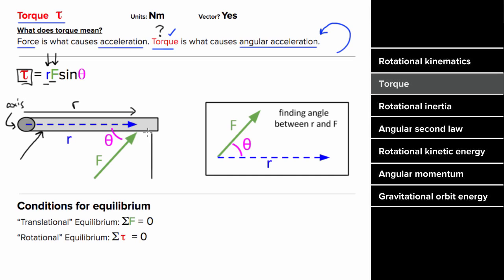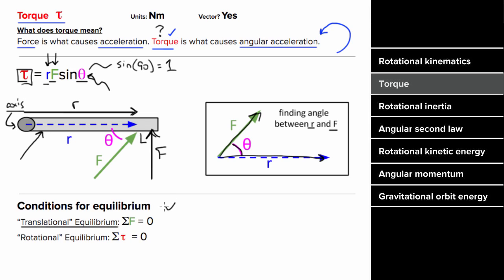To maximize torque, you want to point the force perpendicular to R, since sine of 90 degrees equals one. So exert the force as far away as possible from the axis, and perpendicular to the line from the axis to the point of application. The angle in the torque formula is always the angle between R and F. Just like an object is in translational equilibrium if the net force is zero, an object is in rotational equilibrium if the net torque is zero — causing angular acceleration to be zero. Torque is a vector; its direction is counterclockwise or clockwise. Units are newton-meters.